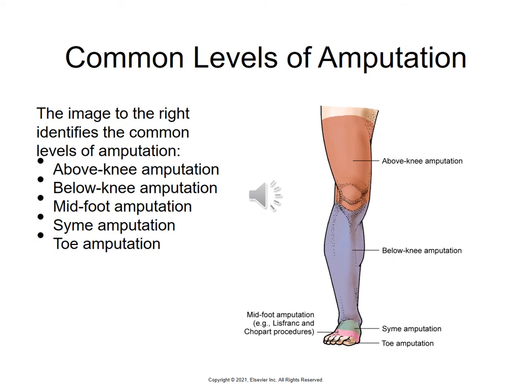Levels of amputation include above the knee (AKA), below the knee (BKA), the knee, mid-foot, the SYME amputation, and toe amputation — the difference between mid-foot and SYME depends on how much of the foot is removed. When you see left BKA or right AKA, you know that patient has had an amputation. If both legs are involved, it will say bilateral BKA or bilateral AKA.